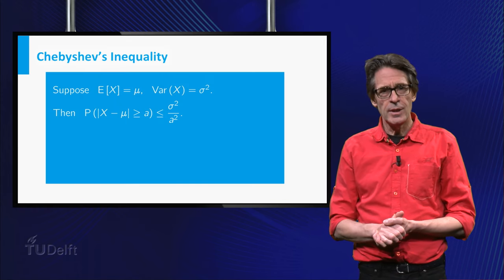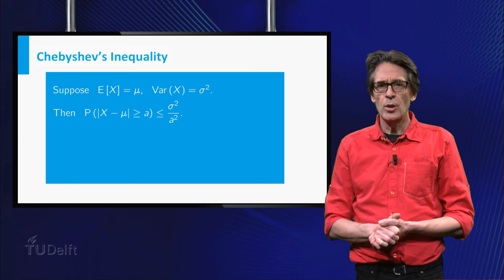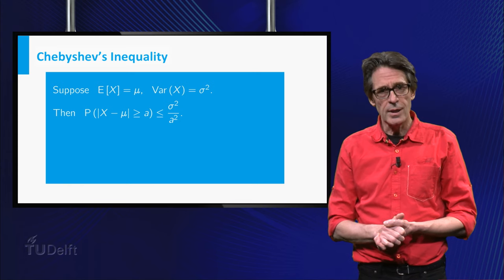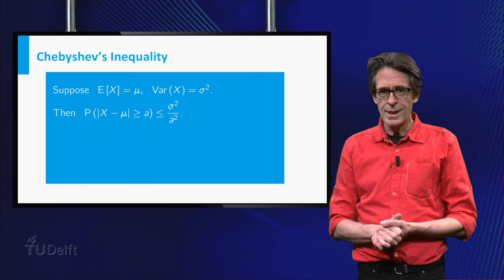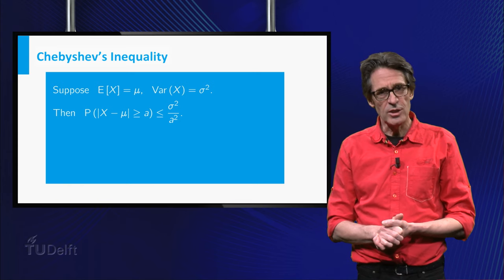This idea is captured in a precise way by the so-called Chebyshev inequality. The probability that X takes on a value that differs more than a from its expectation μ is less than or equal to the variance of X divided by this distance a squared.